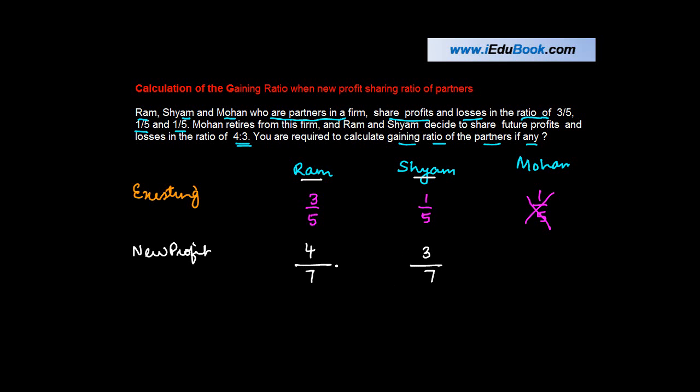Now you are told to find out the gaining ratio. What is gaining ratio? Gaining ratio is nothing but the new profit sharing ratio minus the existing sharing ratio. For existing basis I got 3/5 and now I'm getting 4/7. I need to see if Ram made any gain.